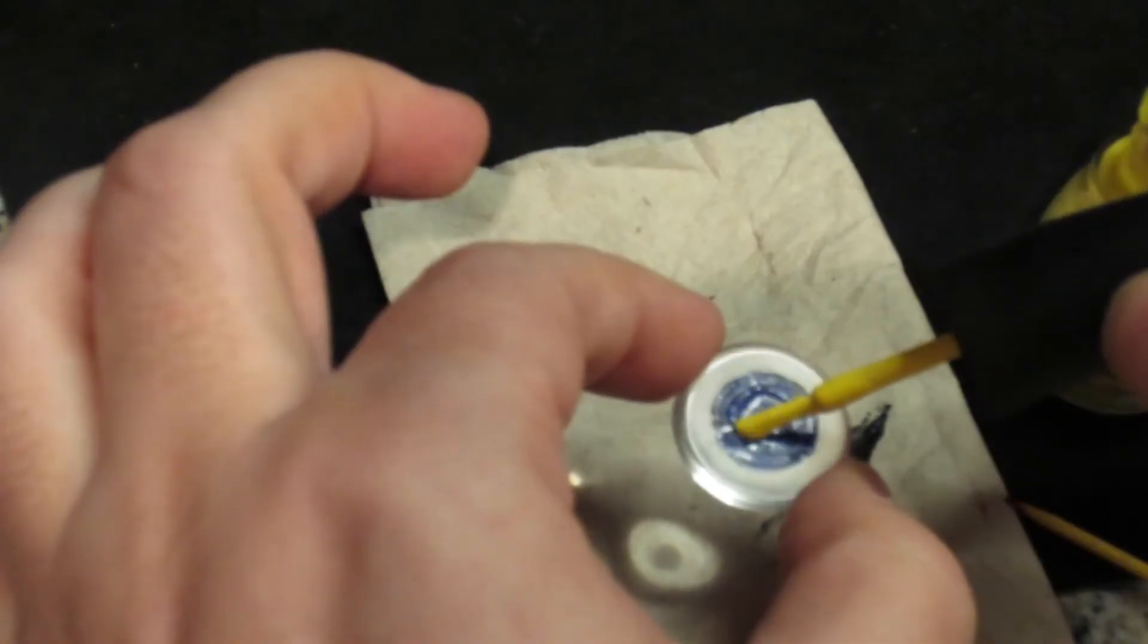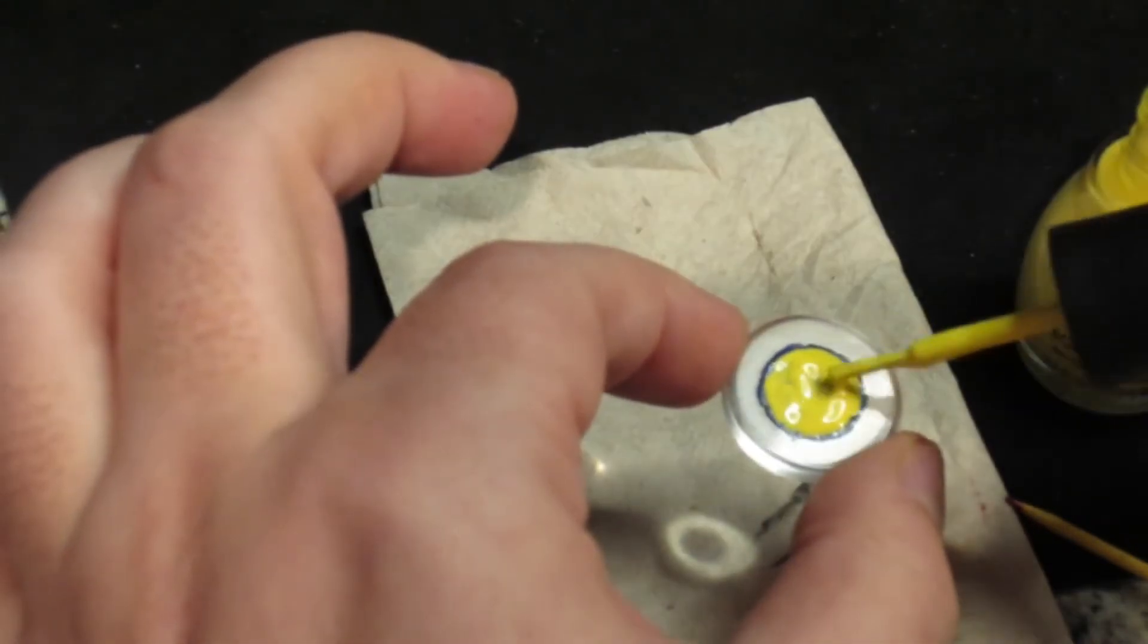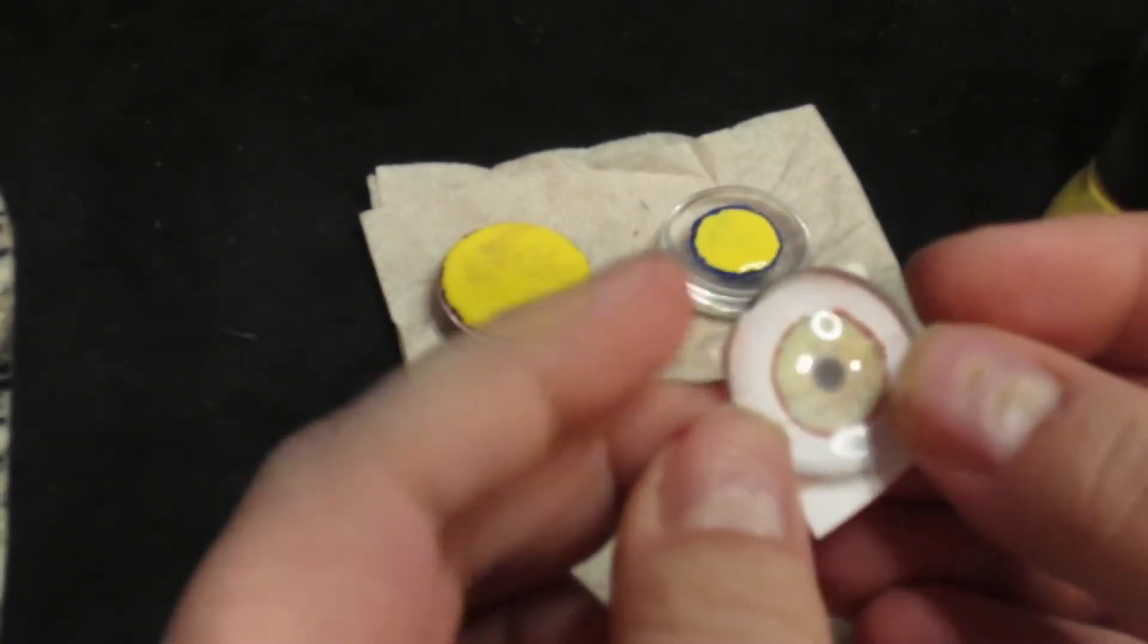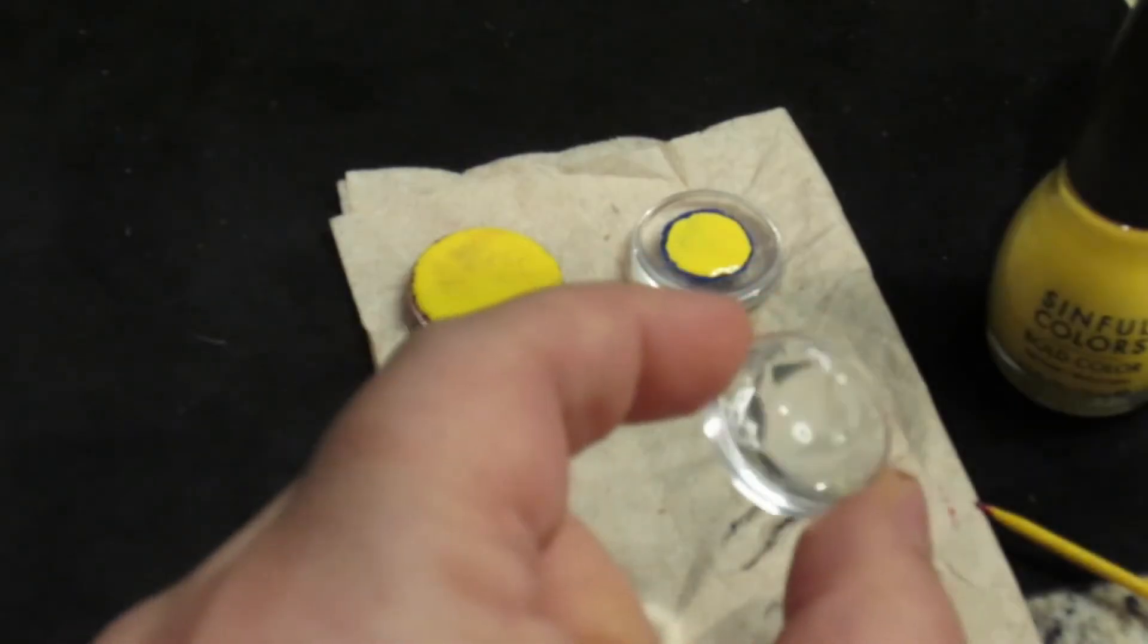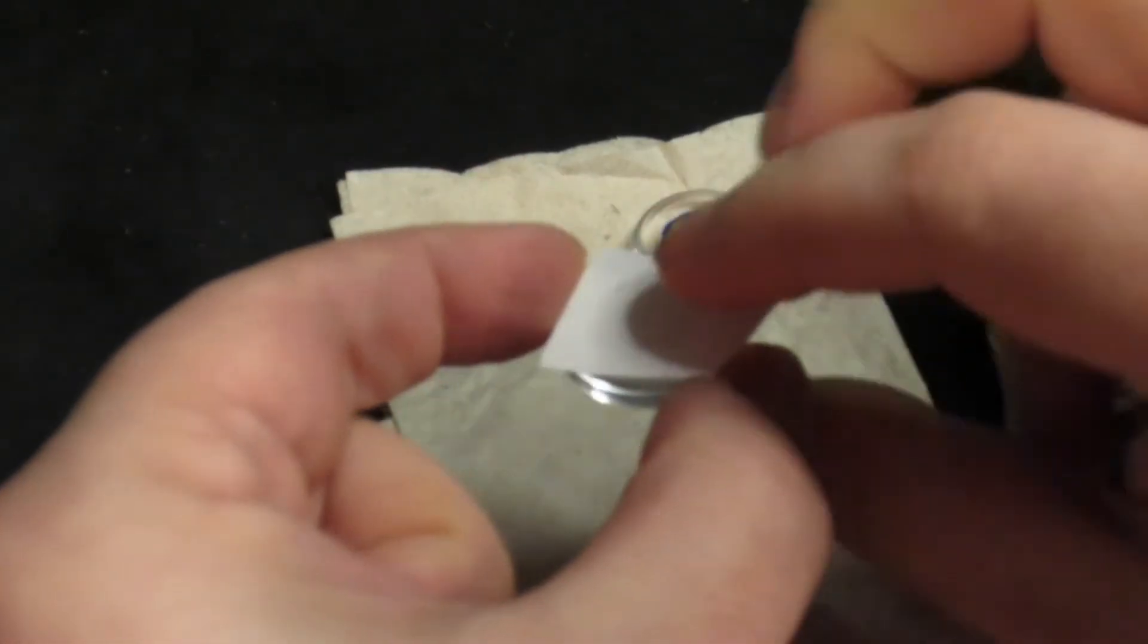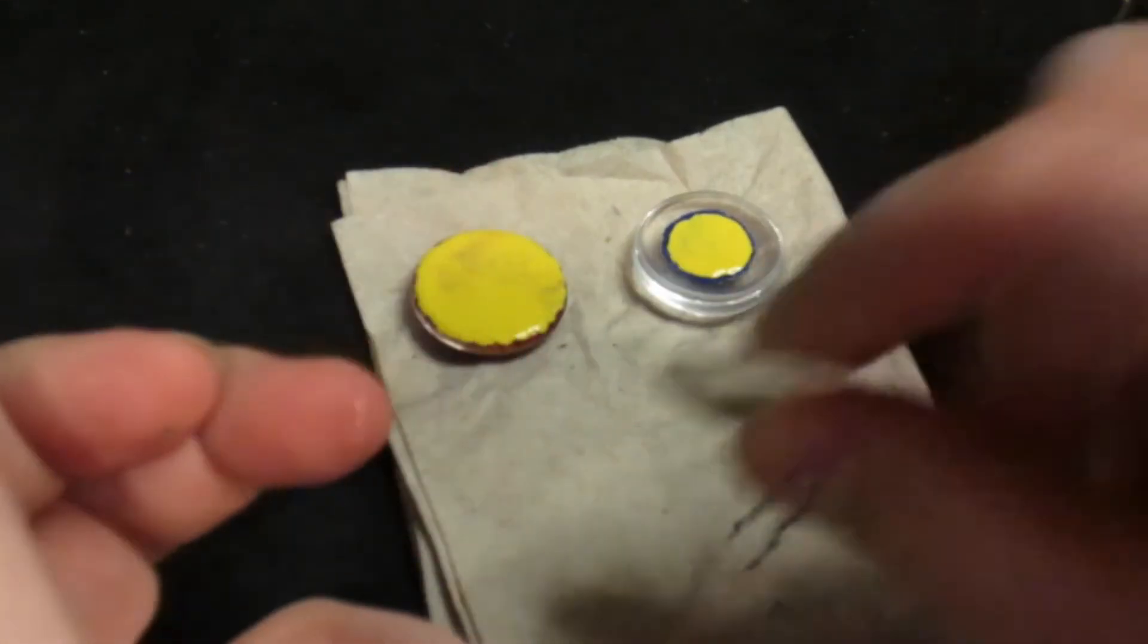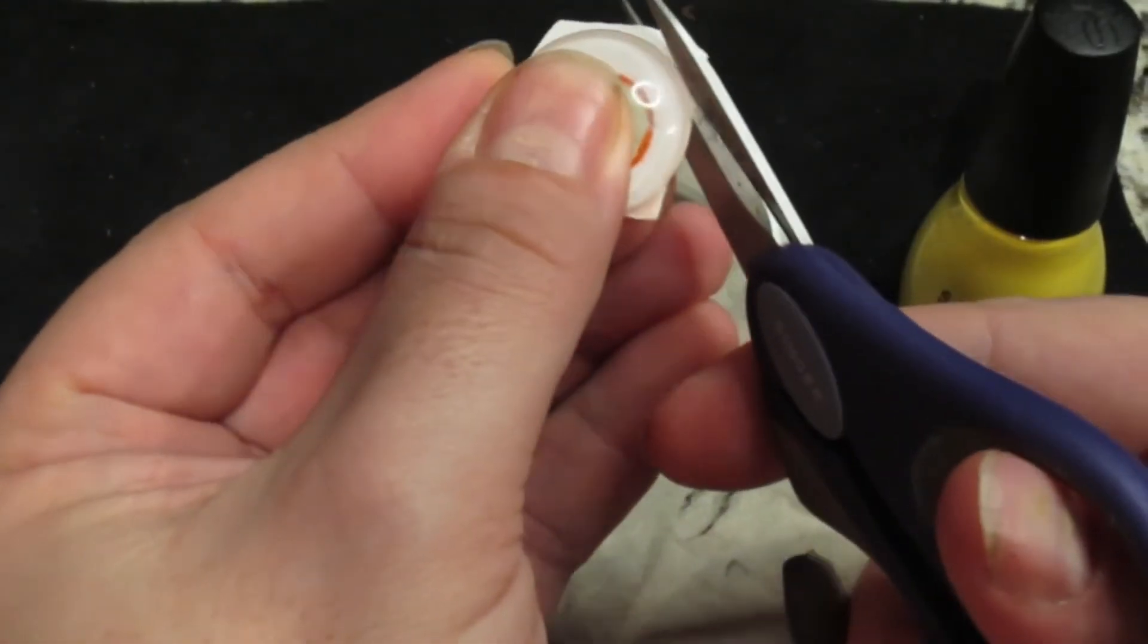If you don't want to paint an eye on the back of the cabochon you can also do this a different way. Simply print out a picture of an eye and glue it to the back of the cabochon. I use clear PVA school glue. Just smear it around the back of the cabochon and make sure there's no bubbles. Press the picture of the eye firmly to the back, make sure it's centered and then set it aside to dry.